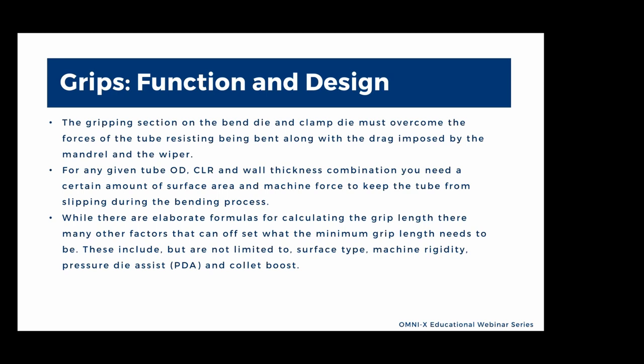Grips: function and design. The gripping section of the bend die and clamp die must overcome forces of the tubes resisting being bent, along with the drag imposed by the mandrel and the wiper. For any given tube OD, CLR, or wall thickness combination, you need a certain amount of surface area and machine force to keep the tube from slipping during the bending process. While there are elaborate formulas for calculating the grip length, many factors can offset the minimum grip length needed, including the surface type, machine rigidity, pressure die assist (PDA), and collet boost.